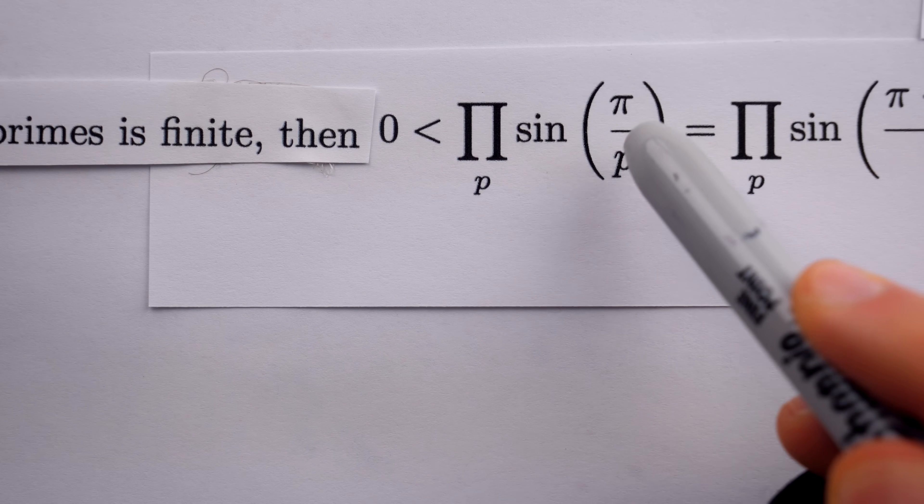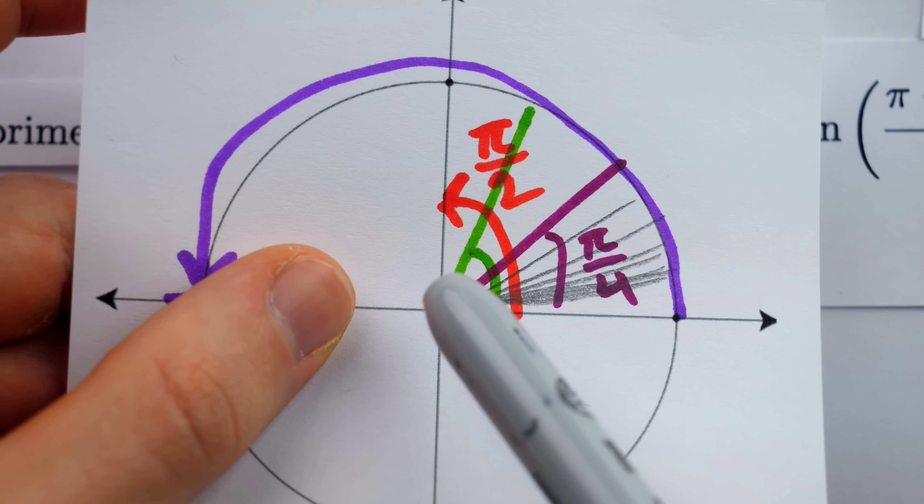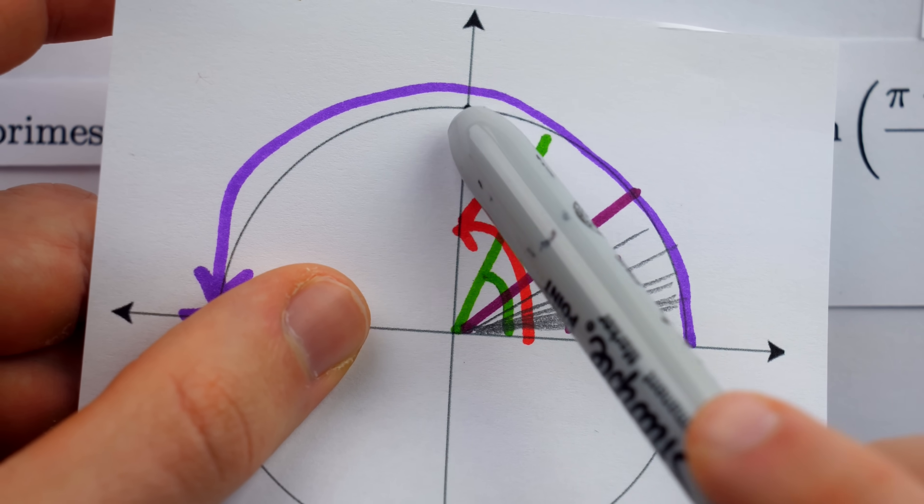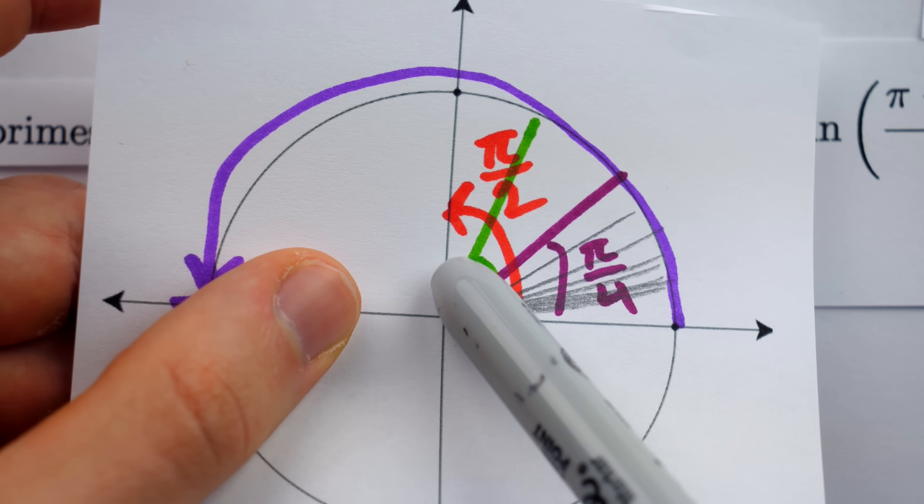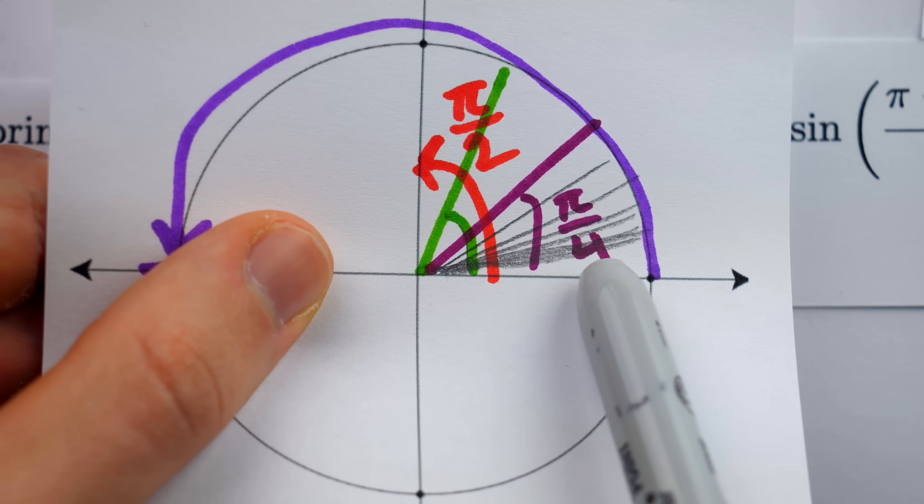Remember, we were just discussing how all of those angles, pi divided by a positive number, they all live in here between pi over two and zero.